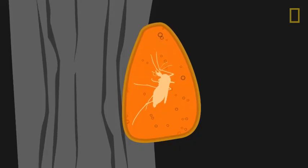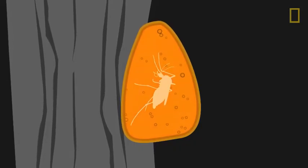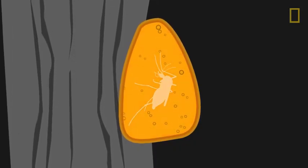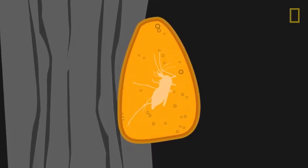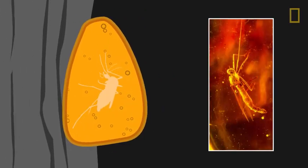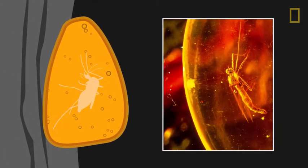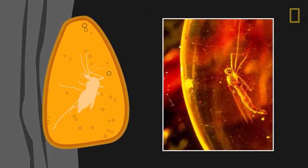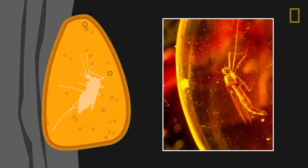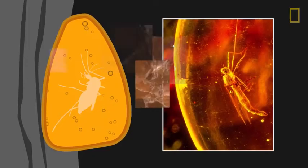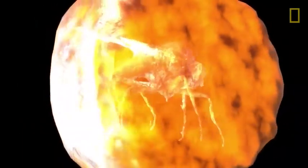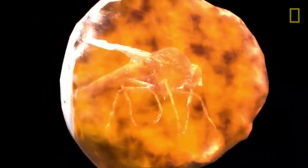Over time, the soft resin hardens and turns into amber, with the organism suspended within. This process creates a biologically inert tomb for the organism, allowing its soft tissues to be remarkably preserved.